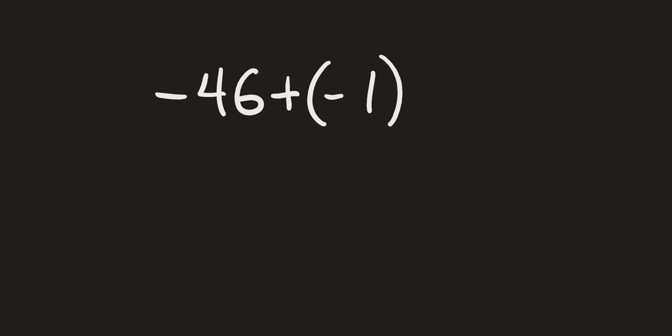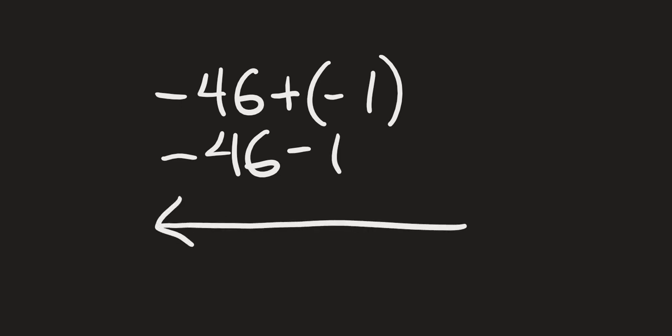Next we're going to have negative 46 plus negative 1. When we have a positive and a negative right next to each other, we can rewrite this as negative 46 minus 1. If we were to draw this on a number line, we start off at negative 46 and go 1 unit to the left, which would give us negative 47.